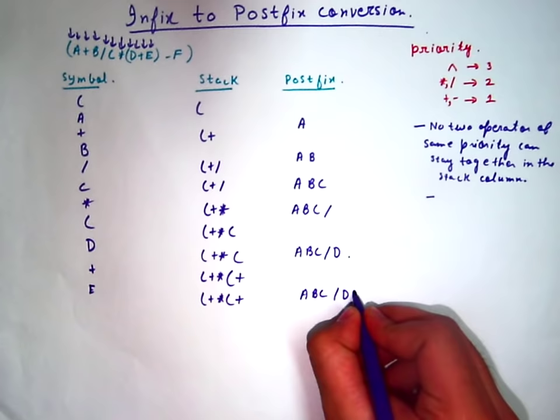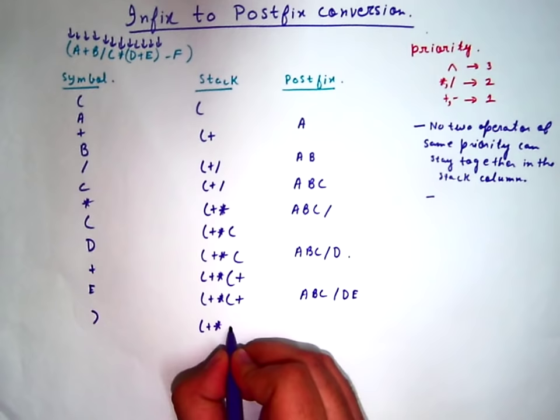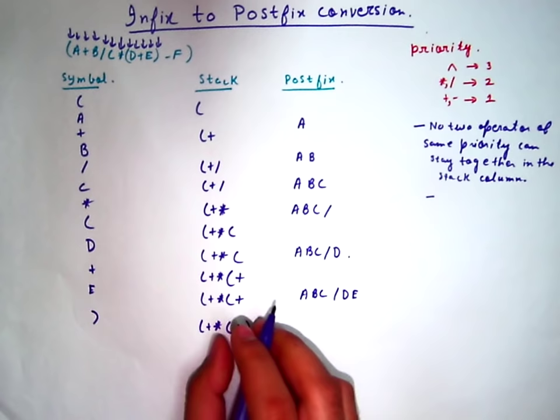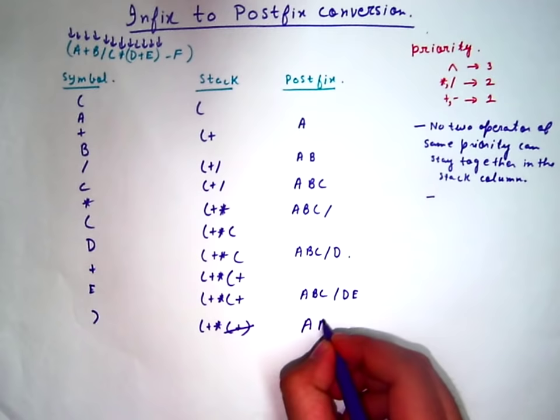Then there is this closing bracket. Whenever a bracket closes, pop whichever operators are in there and add them to the postfix column. So this bracket closes, and this thing will pop out and will be added to the postfix column.